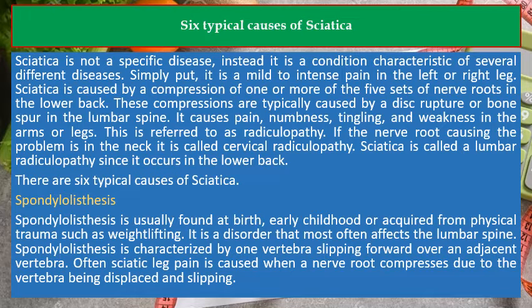There are six typical causes of sciatica. The first is Spondylolisthesis. Spondylolisthesis is usually found at birth, early childhood, or acquired from physical traumas such as weight lifting. It is a disorder that most often affects the lumbar spine and is characterized by one vertebra slipping forward over an adjacent vertebra. Often, sciatic leg pain is caused when a nerve root compresses due to the vertebra being displaced and slipping.